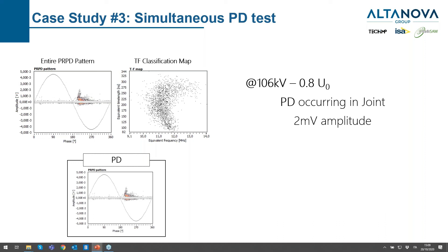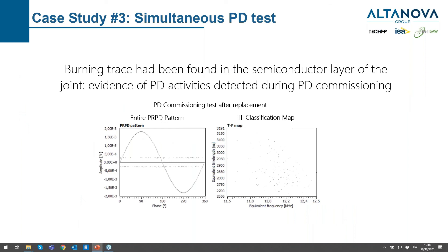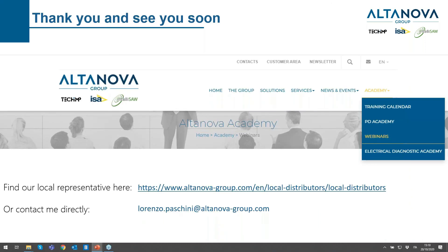At very low amplitude it was possible to see a small PD activity in one joint — 2 millivolts at 106 kV. Following normal procedure, the voltage was increased to 132 kV phase-to-ground to validate the PD without causing joint failure. The full PD pattern became visible and the pulse shape was slightly higher, reaching a peak of 4 millivolts. The test was interrupted and the joint was replaced. After replacement, only noise below 1 millivolt was seen and no PD signal could be detected.